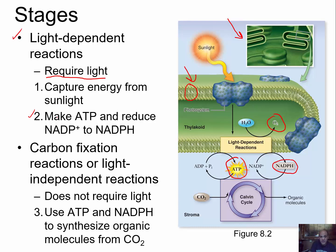The second part, called carbon fixation, or the light-independent reactions, means you don't need light for this reaction — though it can happen in light. All we need are the products from earlier: ATP and NADPH. We use these compounds to synthesize organic molecules from carbon dioxide. The ATP is driving the Calvin cycle. The NADPH is used to add high-energy electrons along with their protons onto carbon dioxide, reducing carbon dioxide to make organic molecules like glucose. This process occurs in the stroma, just outside the thylakoid. The light-dependent reactions occur on or along the membranes of the thylakoid.